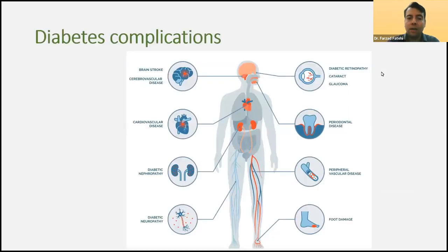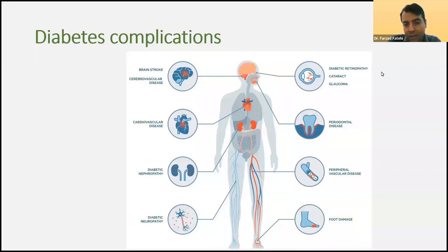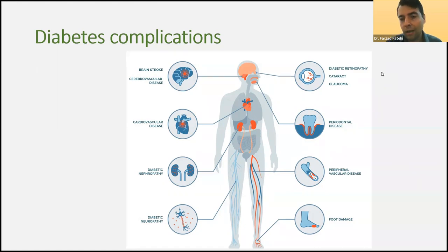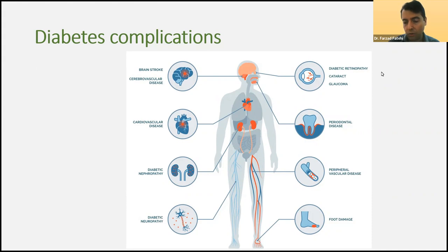Diabetes can attack any system, including the central nervous system — it can cause brain stroke, cerebrovascular disease, and cardiovascular disease such as myocardial infarction and ischemic heart disease. It can be a main cause of diabetic nephropathy, diabetic neuropathy — the main topic of today — and it can involve the eye causing cataract, glaucoma, dental disease, peripheral vascular disease, foot ulcer, and other complications. Therefore, when a patient faces diabetes after some years, or even at the beginning, we may expect complications and should be able to manage them.